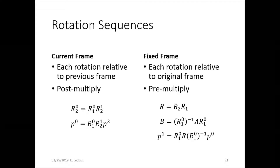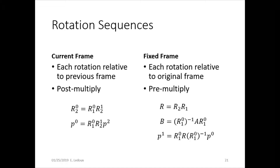To figure out what order to multiply things in, you have to know if it is current frame or fixed frame. In a current frame, each rotation is relative to the previous frame — you might rotate around x, then around the new y, then around the new z. Each rotation is relative to the one before it. That is post multiplication, and it is the most common kind: frame 1 with respect to frame 0, then frame 2 with respect to frame 1, and so on. Fixed frame is also possible — if you keep the frame you're rotating around constant, always rotating the object around the original frame, that is fixed frame multiplication, and in that case you pre-multiply.